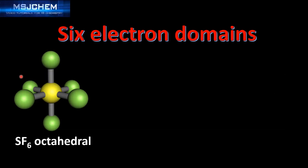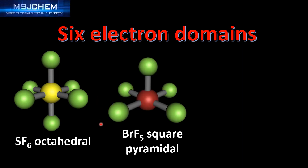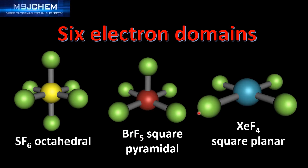Next we look at some 3D representations of these molecules. We'll start with SF6, which is octahedral and has a 90-degree bond angle. Next we have BrF5, which has the molecular geometry square pyramidal. And finally we have XeF4, which has the molecular geometry square planar.